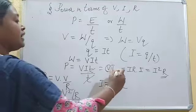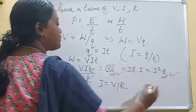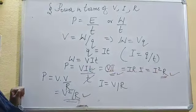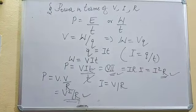That is, power equals V, I, power equals I square R, and power equals V square upon R. These are the three forms of the power.